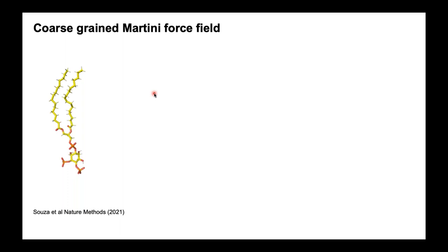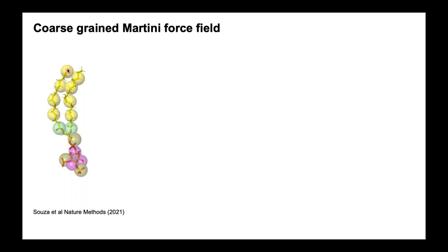There are many ways of identifying these interactions and we use molecular dynamics. Briefly, MD is a way of computationally predicting the dynamics and conformations of a given system, typically including each atom explicitly. Because of the timescales we're interested in and the number of simulations we might want to run, we use a coarse-grained force field — the Martini force field — where groups of atoms are represented by a single bead. This increases the sampling speed dramatically whilst providing a good level of accuracy for the things we're looking at.